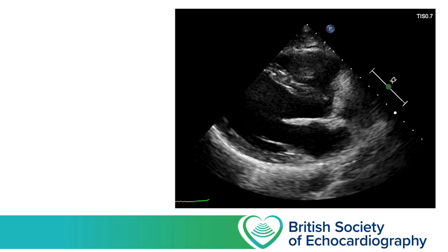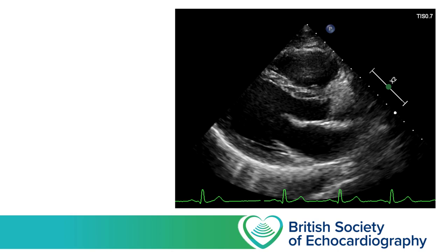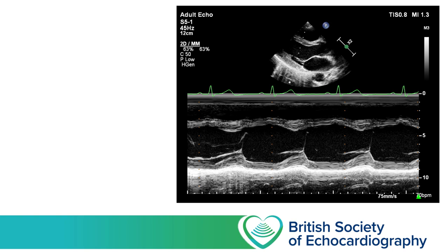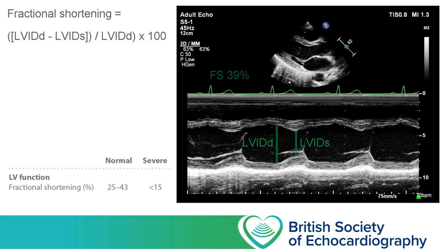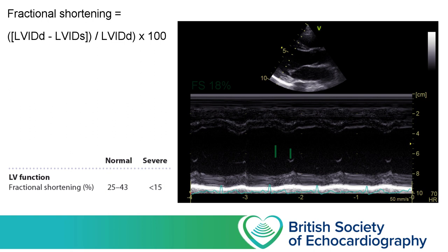We can visually assess the change in cavity size, but if we want to put a number to it we can measure fractional shortening, done either from a 2D video clip or from an M-mode graph taken perpendicular to the LV walls. Measure the LV cavity diameter just beyond the mitral valve tips at end diastole, then advance to peak systole where the cavity is at its narrowest and measure again. The percentage decrease in LV cavity diameter is fractional shortening — we're looking for at least 25% change, with less than 15% suggesting severe LV impairment. In this healthy volunteer, fractional shortening is 39%. By contrast, this M-mode graph from a female patient of similar age with acute septic cardiomyopathy shows fractional shortening of just 18%.